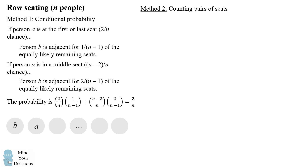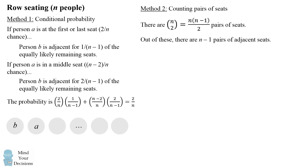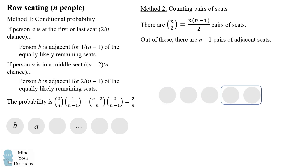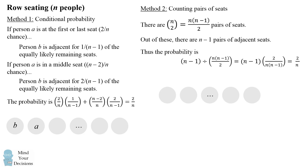We can also solve this by counting pairs of seats. There are N choose 2 pairs of seats. How many adjacent pairs are there? There are N-1 adjacent pairs — each seat can be paired with the seat to its right, starting from the first seat on the left all the way up to N-1, since that very last seat has no seat to its right. Therefore we take N-1 and divide by N choose 2, and that also simplifies to 2 over N.